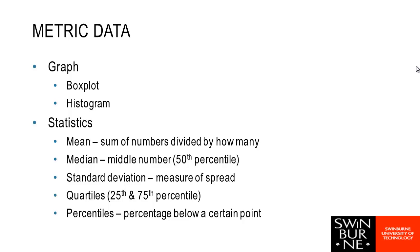When we're looking at metric data, the two graphs that we would commonly use are box plots and histograms. The statistics that we would normally talk about to describe our metric data would be the mean, which is just adding up all the numbers and dividing by how many there are, and the median, which is the middle number when they're all in order, which we also can refer to as the 50th percentile. Sometimes we might look at our standard deviation, which is just a measure of spread. We might look at our quartiles, which is our 25th and our 75th percentile. And sometimes we might look at other percentiles, so it could be the highest 1% or the lowest 1% or the highest 10%.